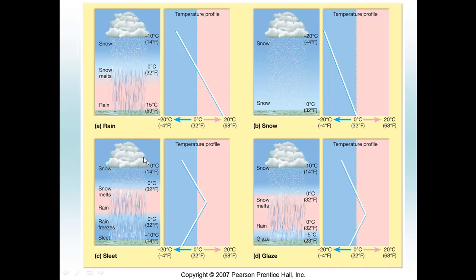Looking at the diagram, in part C you can see how the cloud is producing snow in the upper parts of the atmosphere where it is below freezing, but then there is a mid-level warm layer. Notice the temperature profile: normally temperature decreases as we increase in altitude, but here there is an inversion — temperature actually warms as we go higher up in the troposphere, then cools again at a certain level. This is where atmospheric soundings on skew-T plots can be very useful.